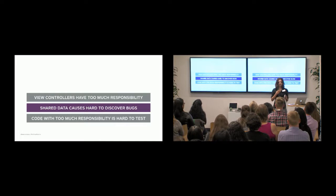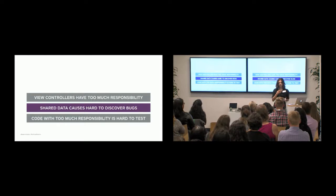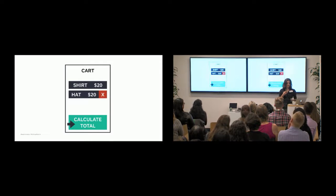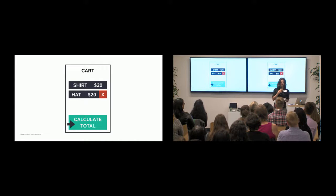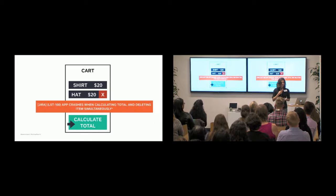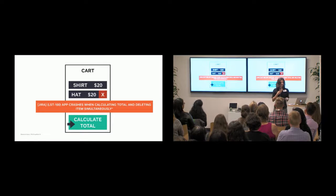The next piece is that shared data causes hard-to-discover bugs. Allowing multiple actors to share and edit the same data can lead to unexpected behavior and race conditions, which can be really hard to track down and reproduce when you get a bug report. For example, if a customer tries to delete an item from the cart and calculate the cart total at the same time, the app crashes because of a null pointer exception, since the item being totaled no longer exists. Once again, we get bugs.